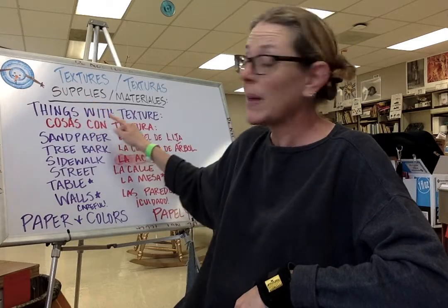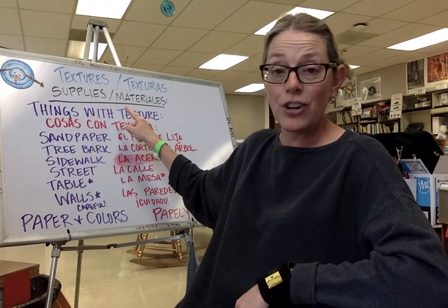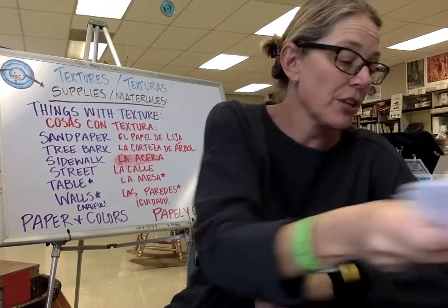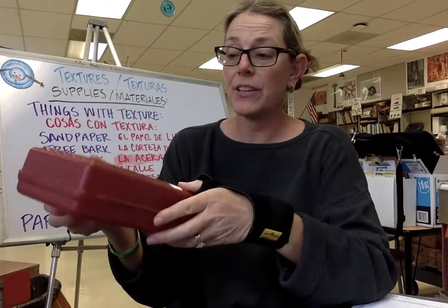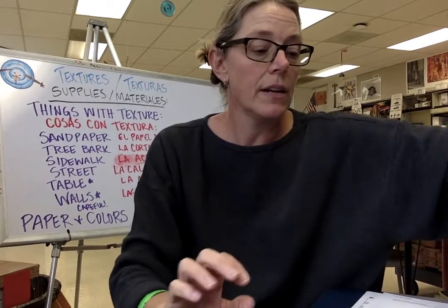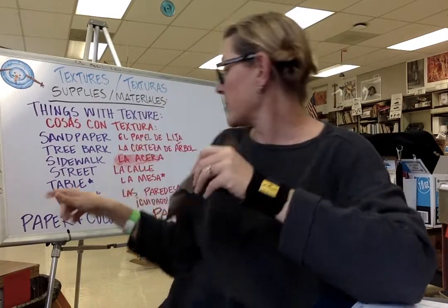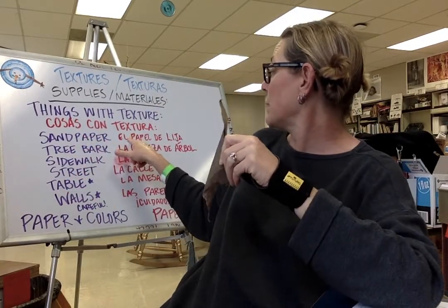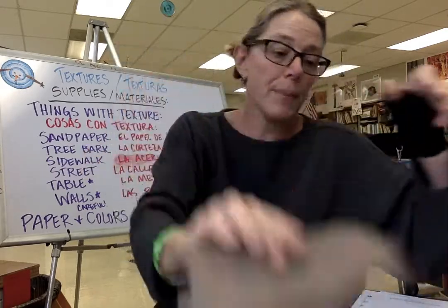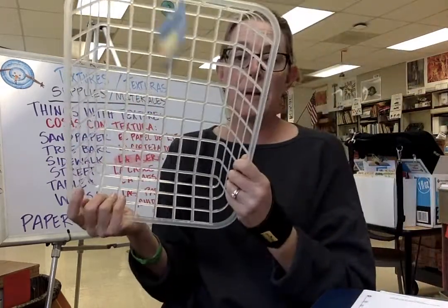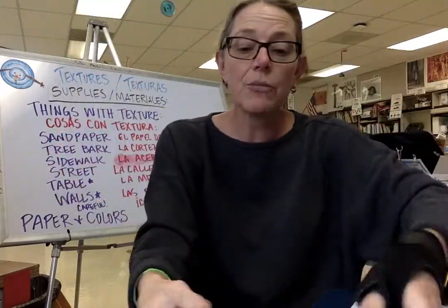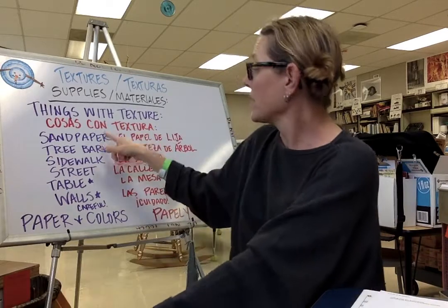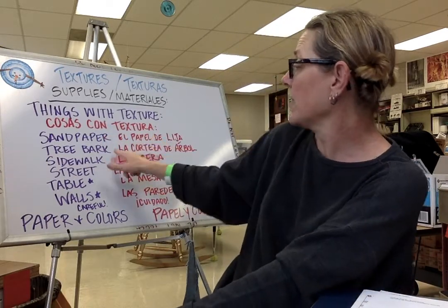The supplies you will need are things with texture — cosas con textura. I'll show you some examples. The lid to my pencil box has texture. Sandpaper — El Papel de Lija — is actually on here. My basket also has a texture, so look for things around your house or sandpaper.